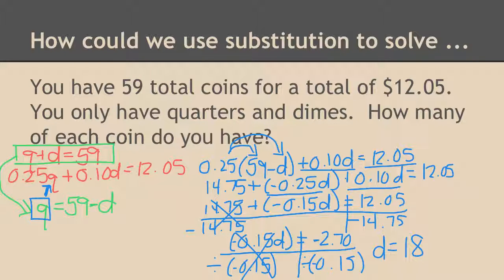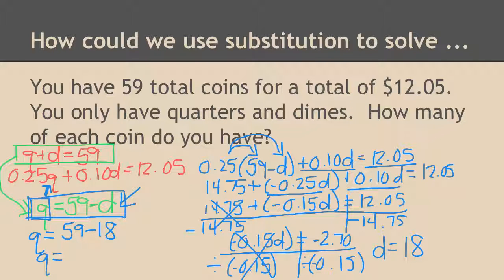So I'm going to go back to this equation the one that I used for my substitution. I'm going to put 18 in for my dimes so my quarters were 59 minus the 18 I just calculated. It looks like there are 41 of those. So to answer the question how many of each coin do you have, I have 18 dimes and 41 quarters. Alright good job today.